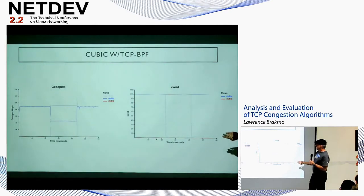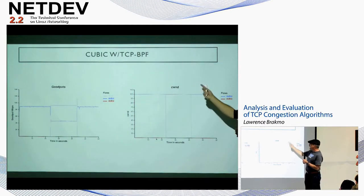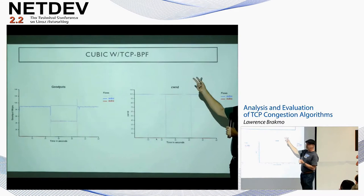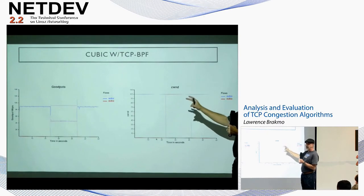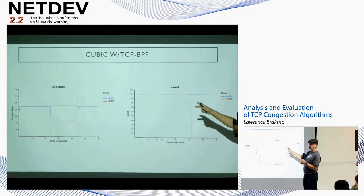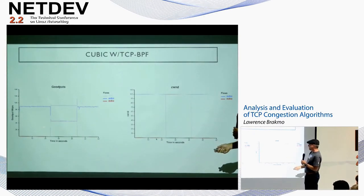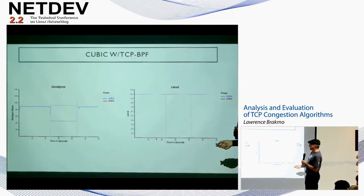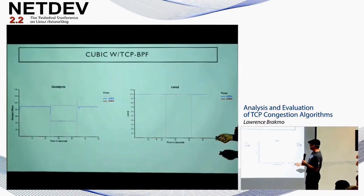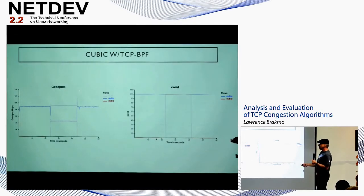Using TCP BPF to clamp the congestion window to 100 packets for Cubic, everything works really nicely — they all stay at 100 packets, perfectly shared.